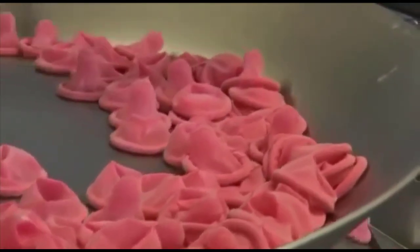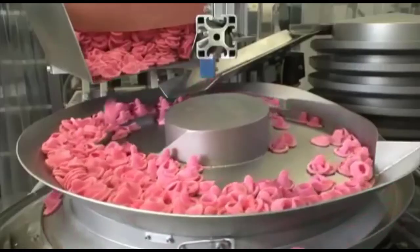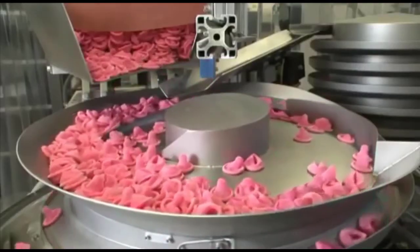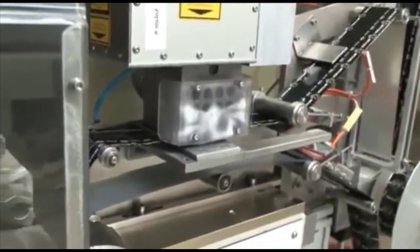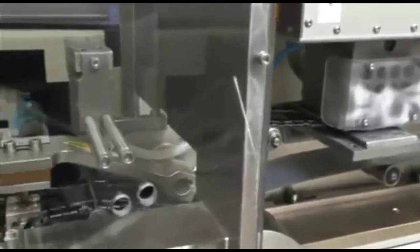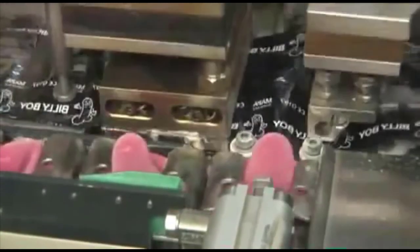Once tested and rolled up, the condoms can now be wrapped into their primary wrappers. Each condom is fully-automatically sealed airtight into its own sealing foil. Here, each condom type also receives its specific lubricated coating and aromatic flavor.